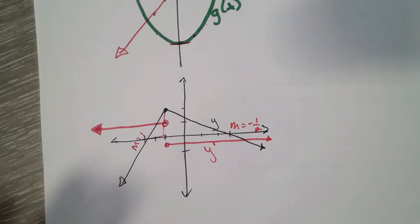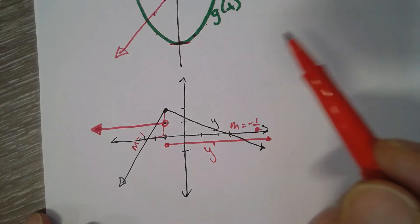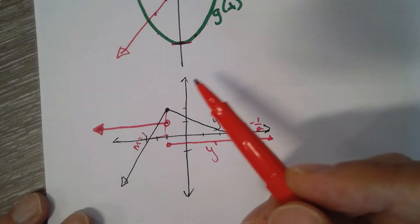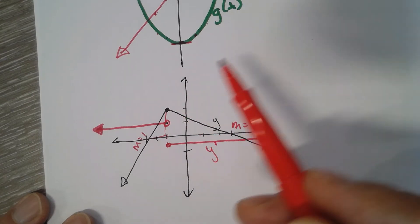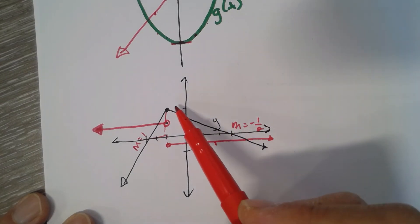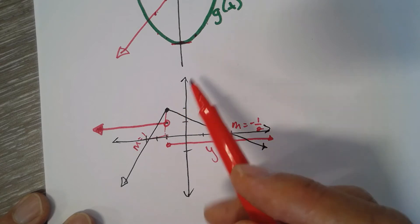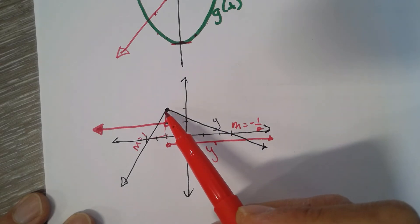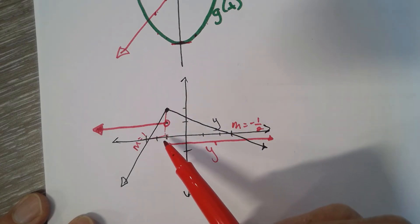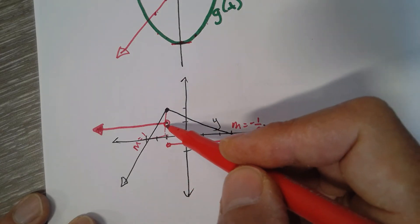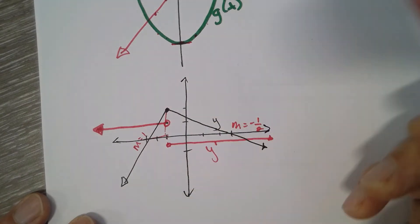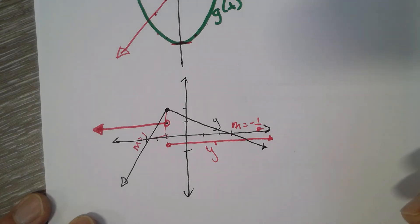Section 3.2 talks about differentiability — where derivatives exist and cannot exist if it's not smooth. This is not smooth; it's called a corner. So the derivative at that corner doesn't exist, and that's why those two pieces have open circles — because the derivative doesn't exist there.